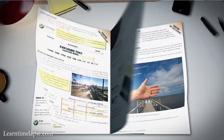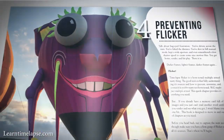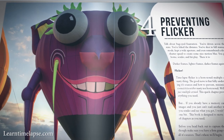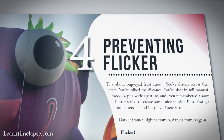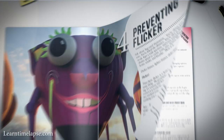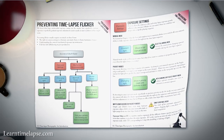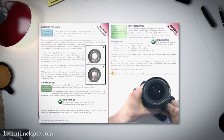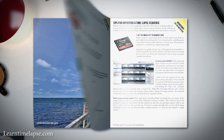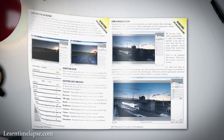We actually invest an entire chapter into timelapse flicker — the different sources, why it occurs, both through camera exposure settings and through mechanical inconsistencies. We go through in detail all the different ways you can prevent it, and then if it does occur, how to correct for it in post-production.